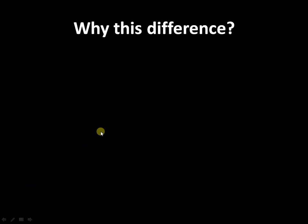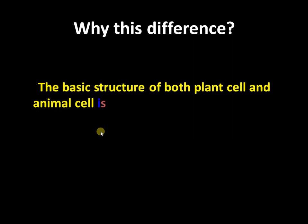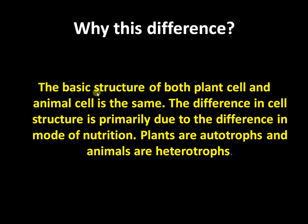As we all know, all organisms are made up of cells — from bacterium to plants, all organisms are made up of cells. The structure of all these cells is the same in all organisms. The basic structure is similar, but the difference in cell structure is primarily due to the difference in mode of nutrition.